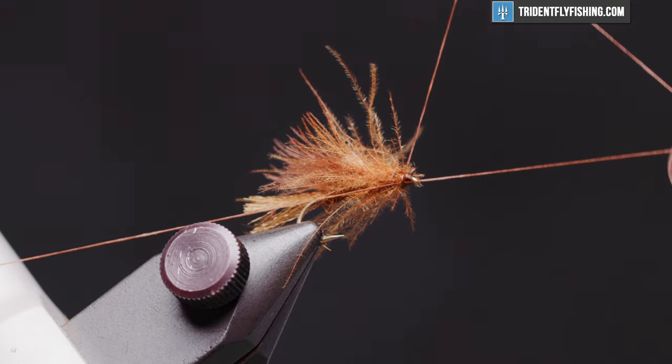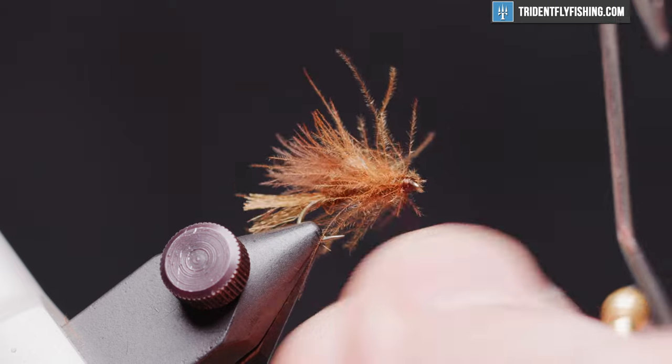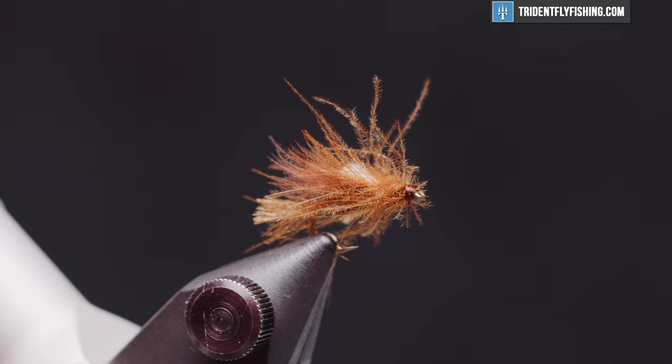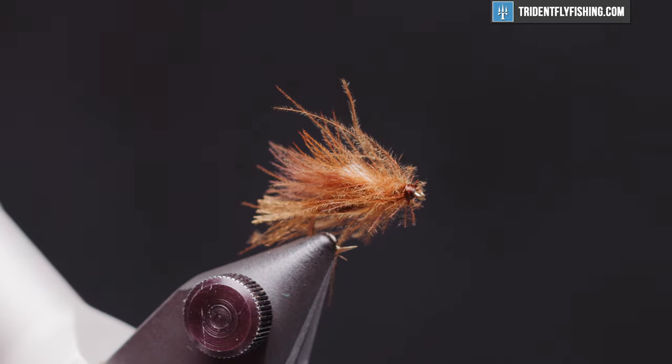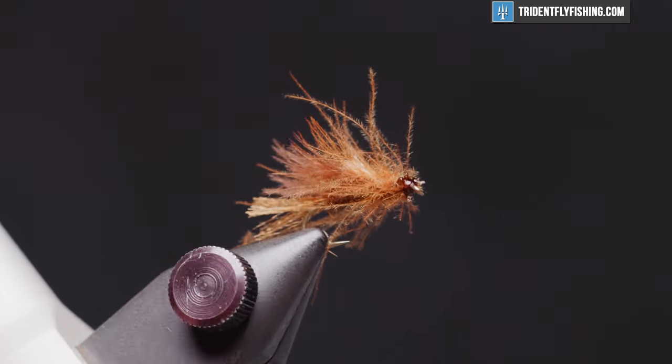Form a small head. Whip finish tool. Four or five turn whip finish. Snip our knot, cut our thread. And just a dab of head cement. And our fly is finished.